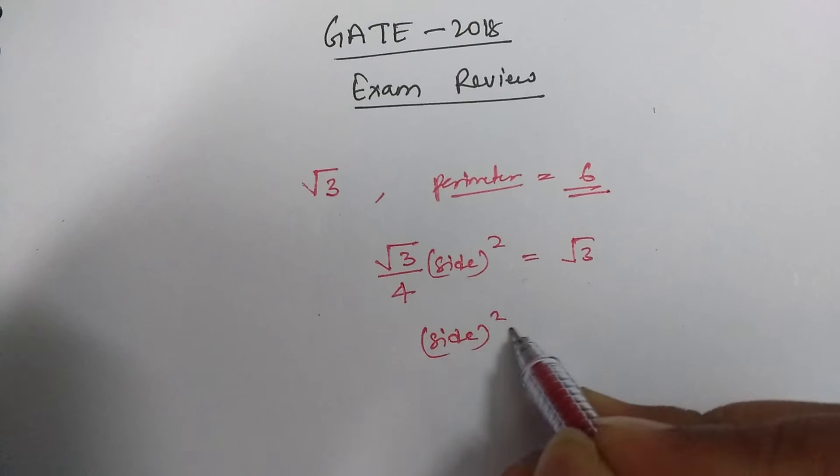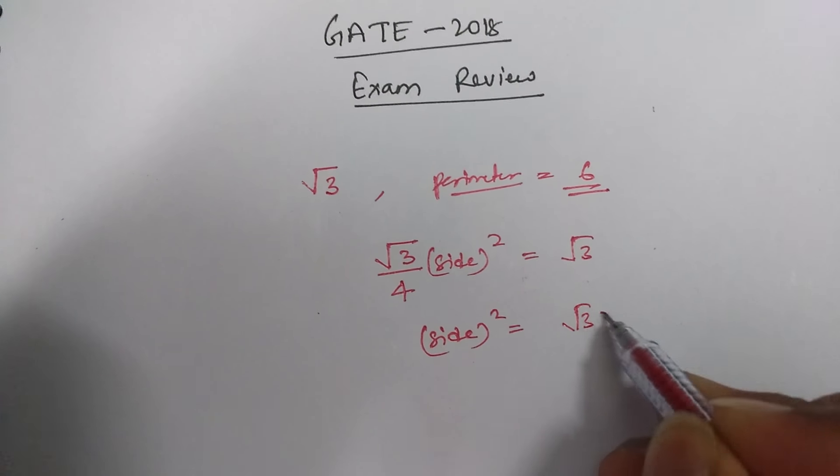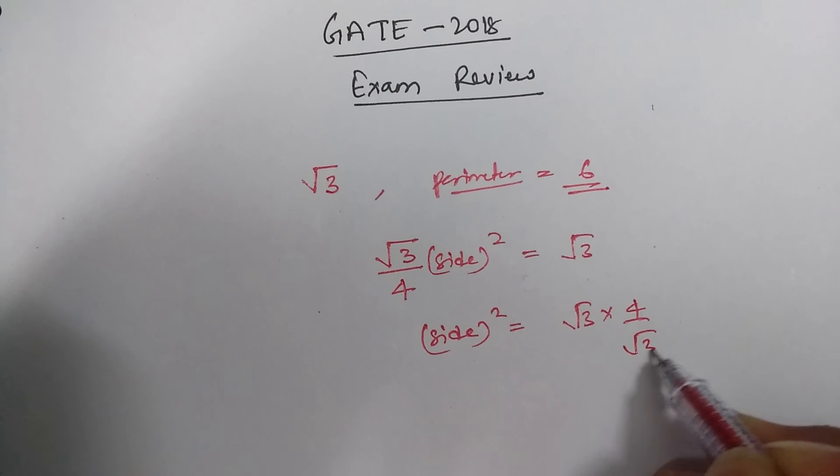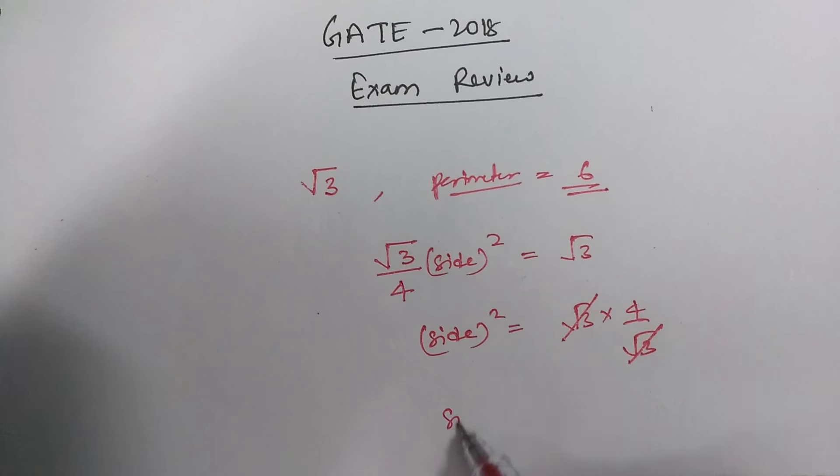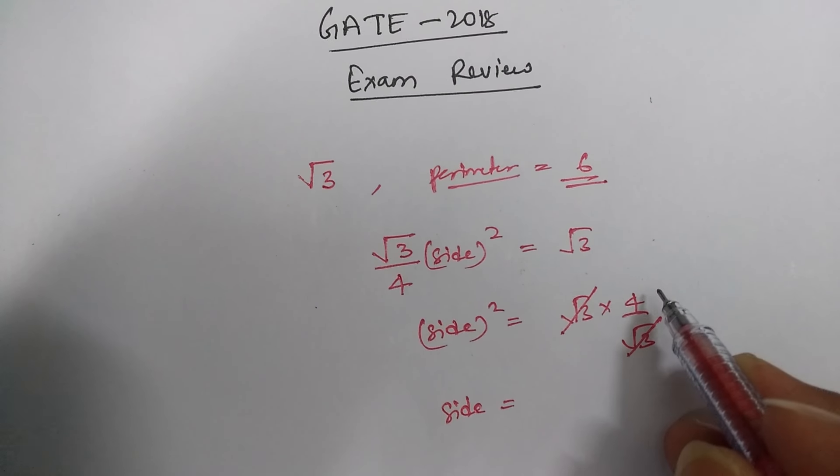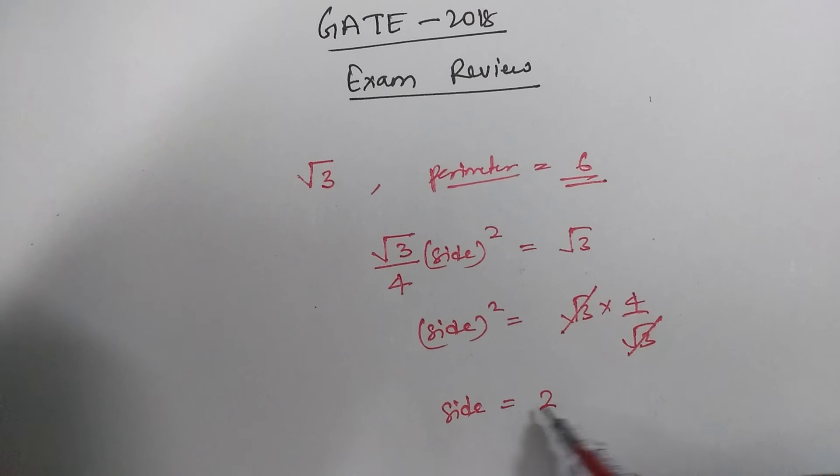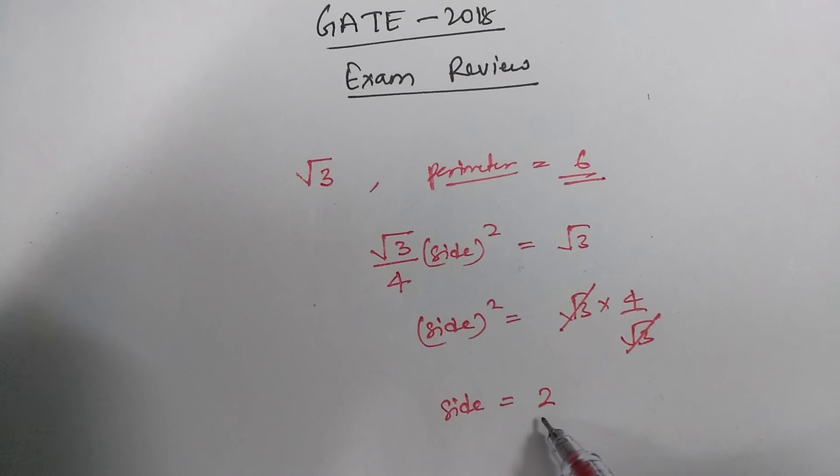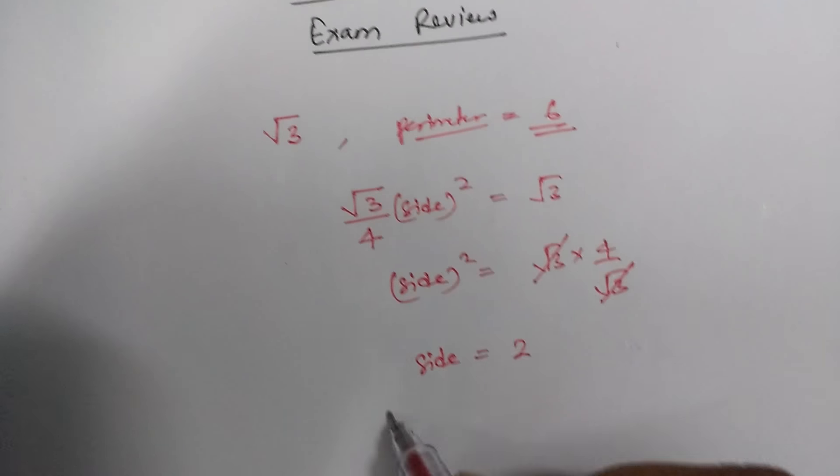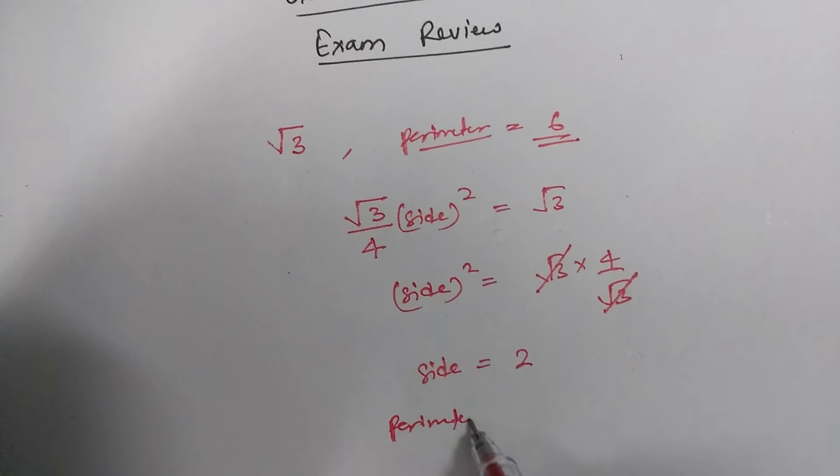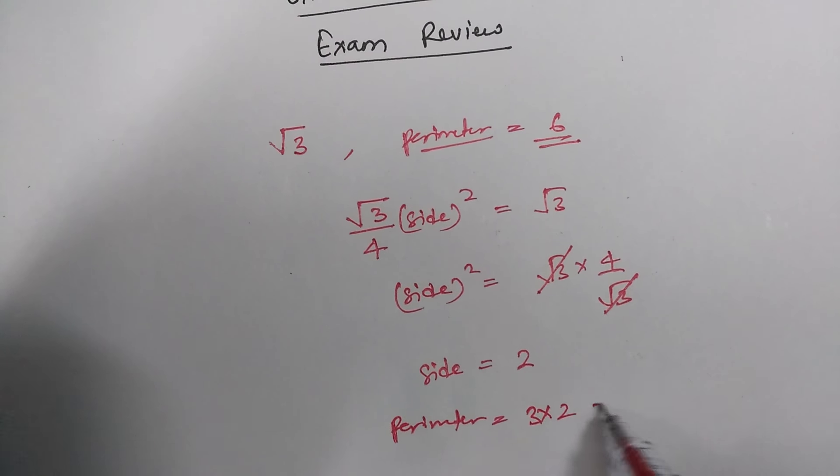So side square value will become root 3 into 4 upon root 3, so these root 3 will cancel out and side value will be like you can take under root of 4, it will become plus minus 2 and you have to take only plus 2. So for perimeter, perimeter formula is 3 into 2, so it would be 6. So 6 was the correct answer.